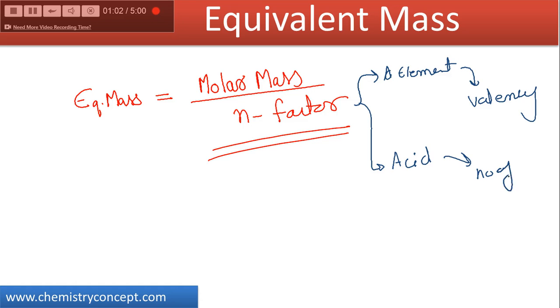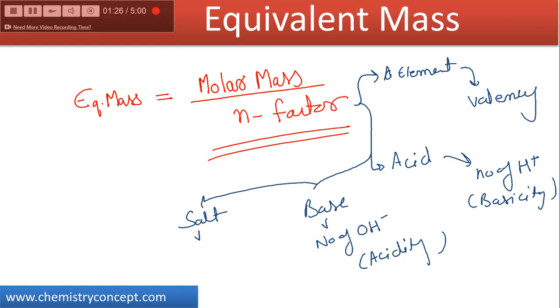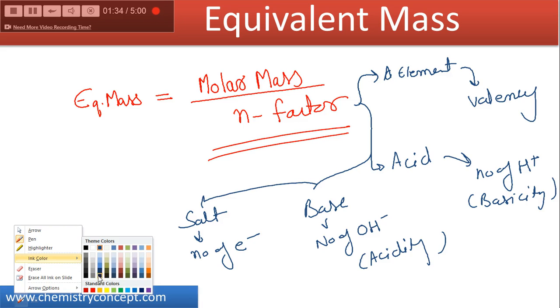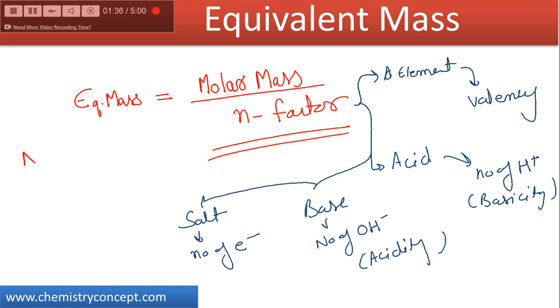number of replaceable hydrogen ions, that is acidity of acid. If we are calculating for a base, then it is number of replaceable hydroxide ions, that is basicity. If we are calculating for a salt, then n-factor is number of electrons transferred. Now let's have a look at the n-factor of NaOH. It's